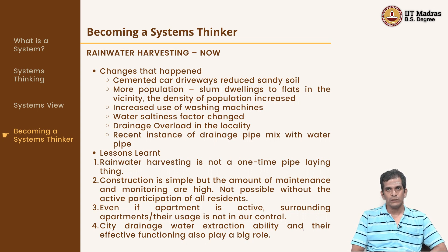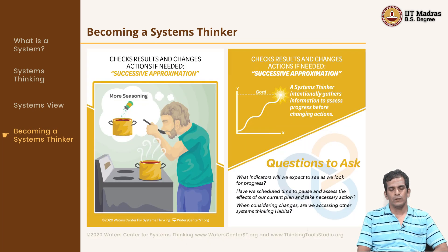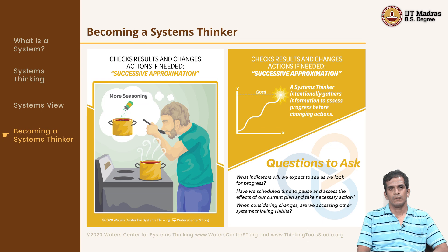We will go to the understanding of the next two habits through another example. Because systems are complex and there are so many parameters and variables, it is often difficult to quickly see results on a large scale. How do we make progress in complex systems? And how do we monitor it systematically, looking into the different aspects of the system?